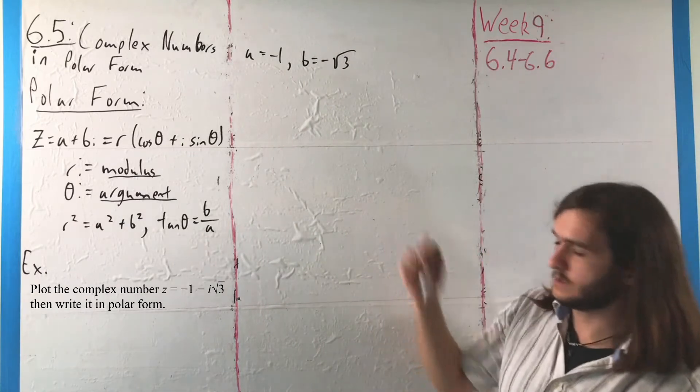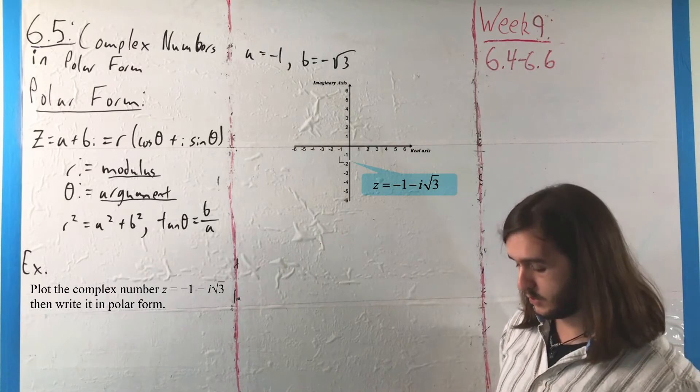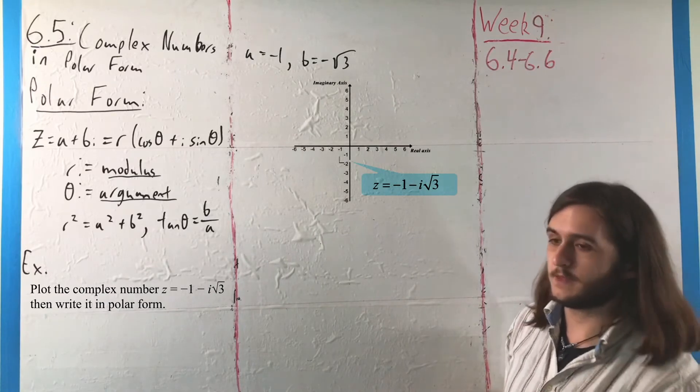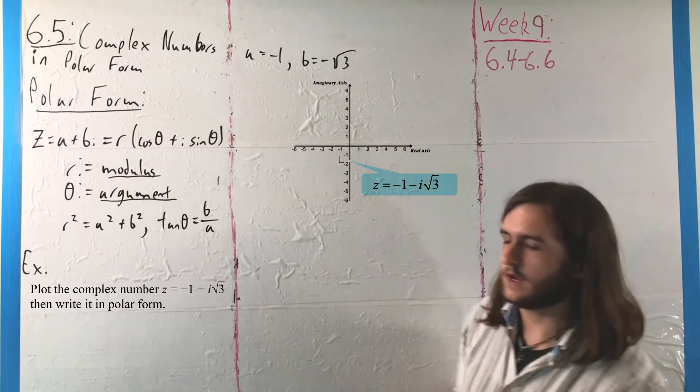If we wanted to plot it, we'd end up in the third quadrant. From there, to convert to polar form, we just need r and θ.